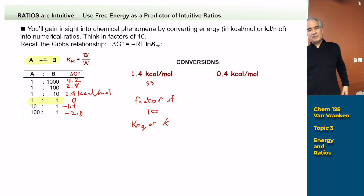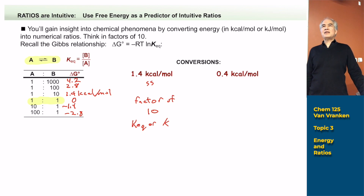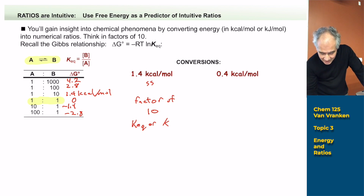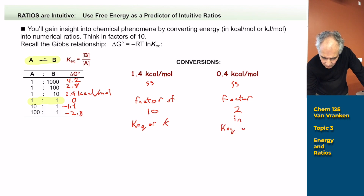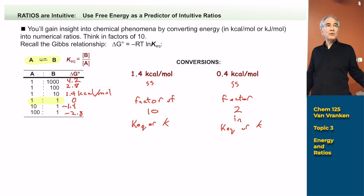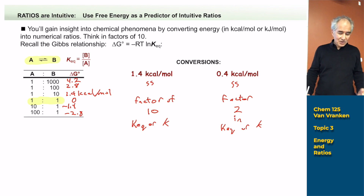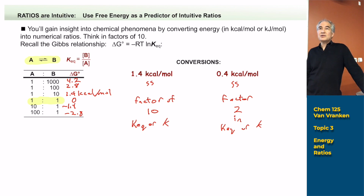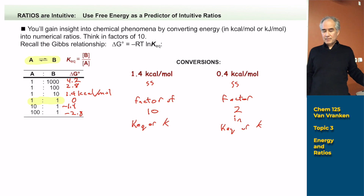Sometimes people tell me two products formed in a two-to-one ratio. That's not really ten-to-one, and it's not one-to-one. That turns out to correspond to 0.4 kcals per mole — a factor of two. If things form in a two-to-one ratio competitively, that means one transition state was 0.4 kcals per mole lower in energy than the other one. I expect you to take numerical ratios and make free energy sense out of them — whether it's competing reactions, meaning transition states, or equilibrating species, meaning ground state energies.